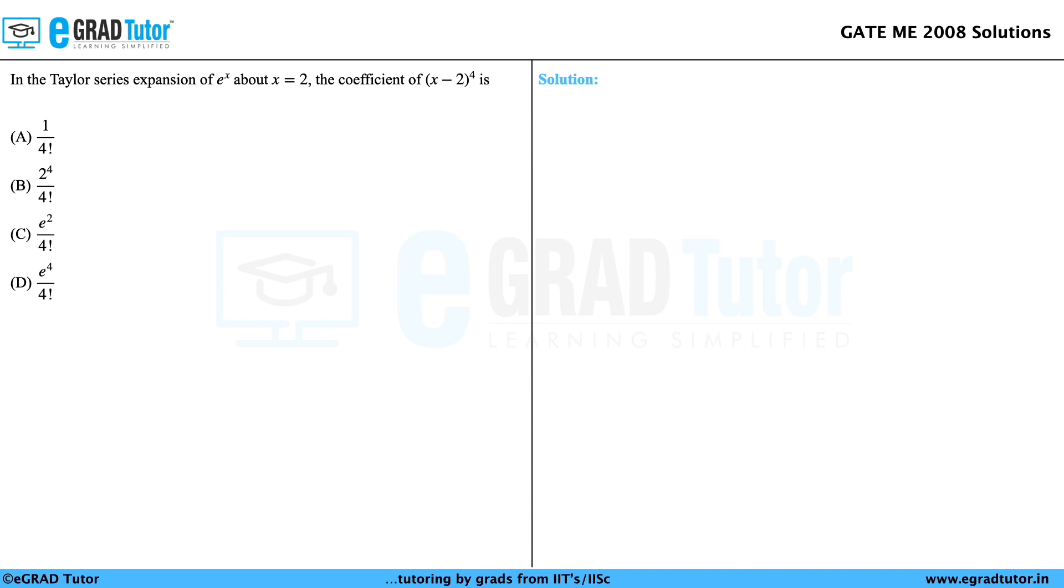In the Taylor series expansion of e^x about x = 2, the coefficient of (x - 2)^4 is? This question is from calculus in engineering mathematics. Let's look at the solution.